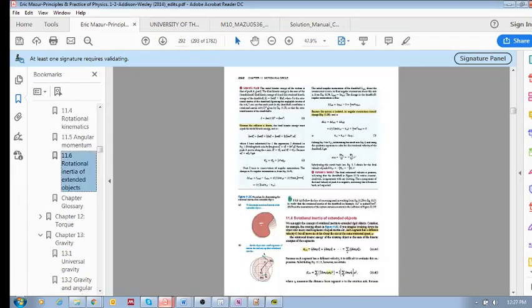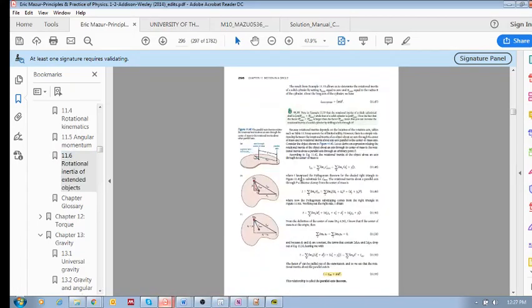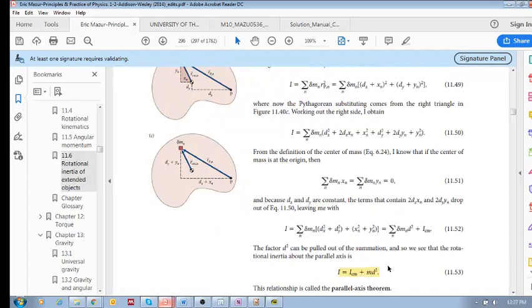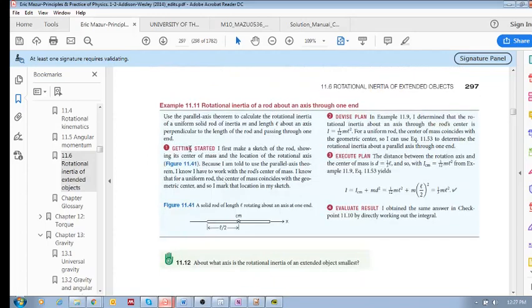And then what we need to do is add the second term, which is MD², where M is the total inertia of the object, and D is a perpendicular distance. It is the distance between the two axes. So let's look at this example.